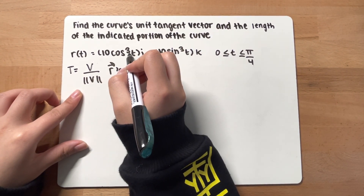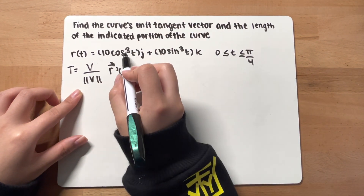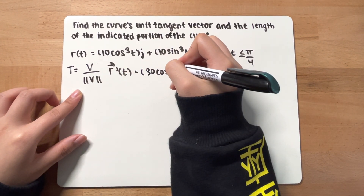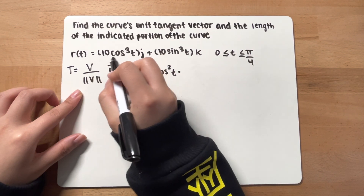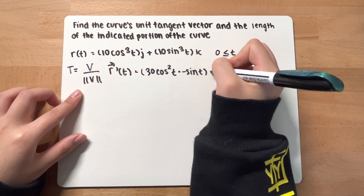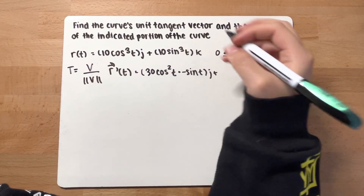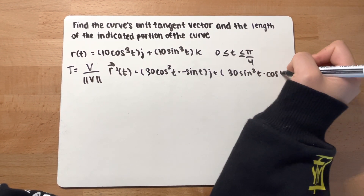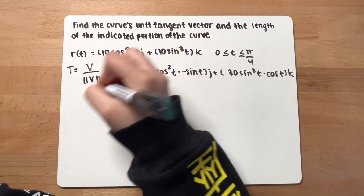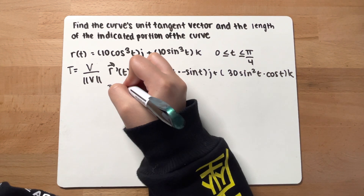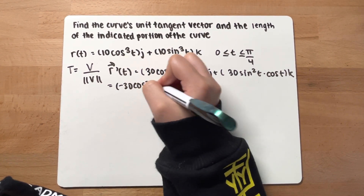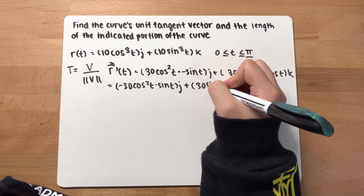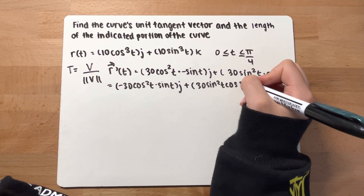The derivative of 10 cosine cubed t — you multiply the exponent down, so you get 30 cosine squared t times the derivative of cosine, which is negative sine t, giving the j component. Similarly, for the sine cubed term, you get 30 sine squared t times the derivative of sine, which is cosine t, giving the k component. Simplified: negative 30 cosine squared t sine t j plus 30 sine squared t cosine t k.